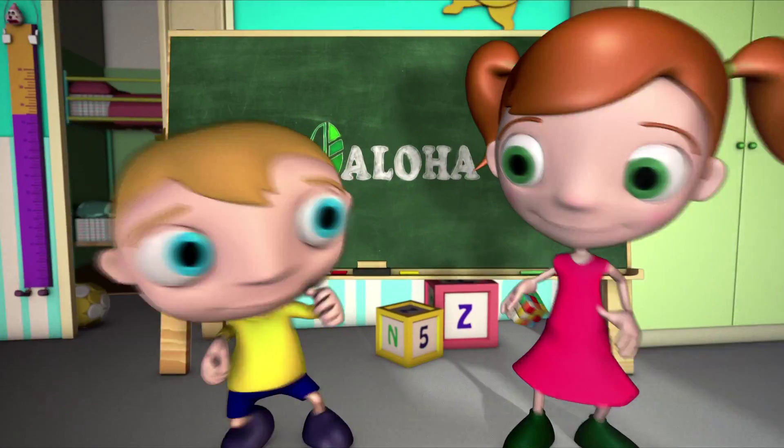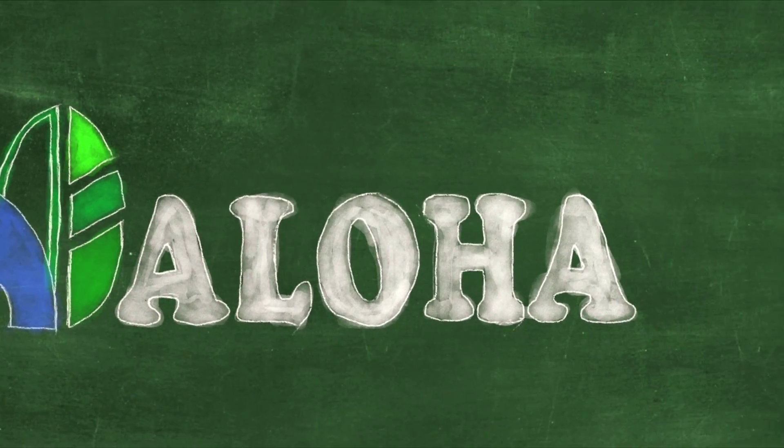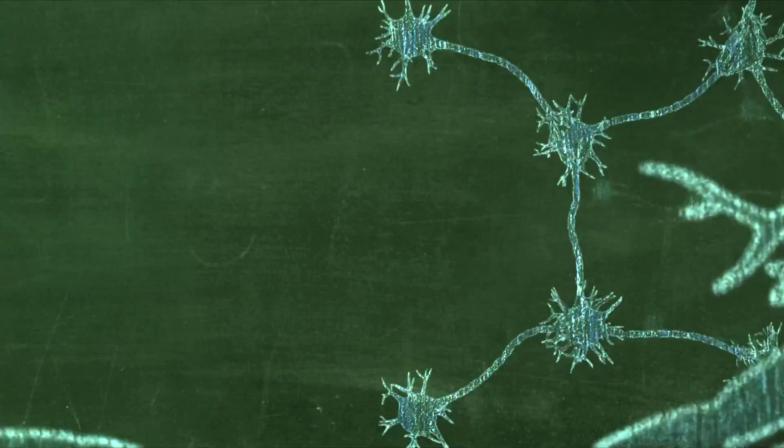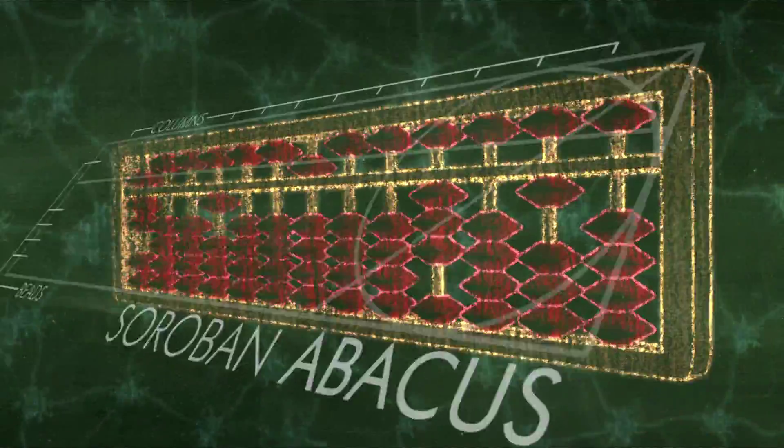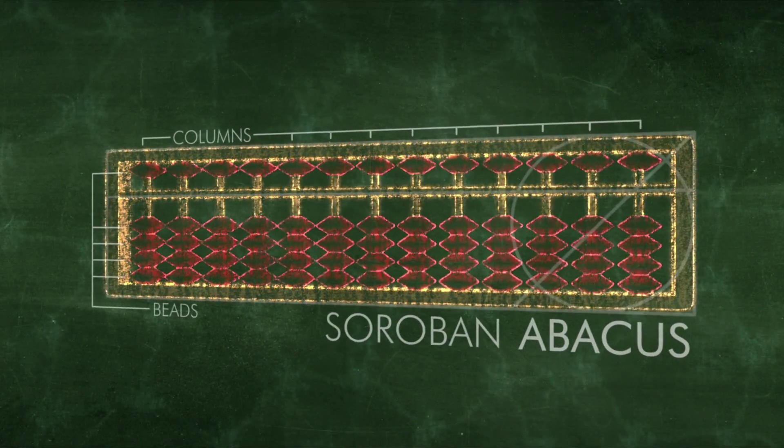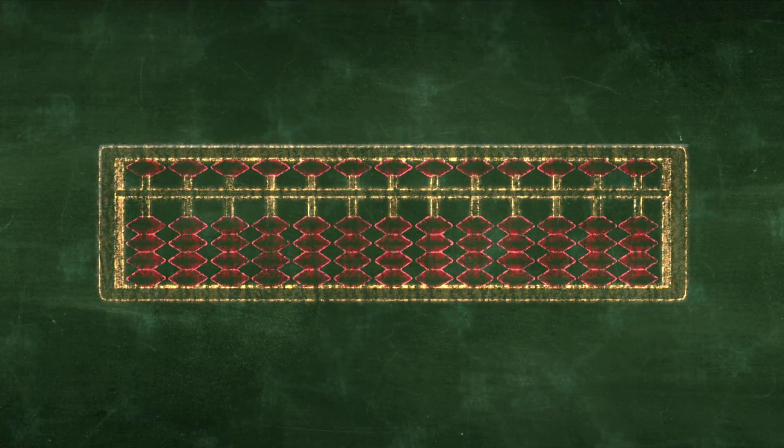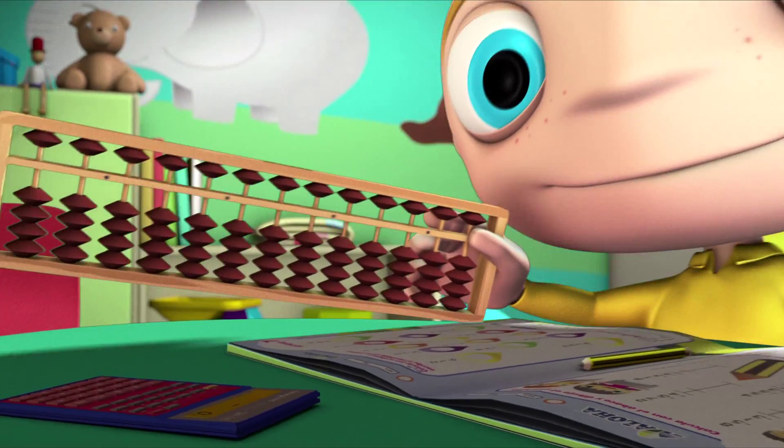The abacus, the earliest calculating device ever known, is the tool used by students in this program. This device consists of a rectangular structure with beads sliding on columns. At first, children learn to solve arithmetic operations by physically using the abacus.